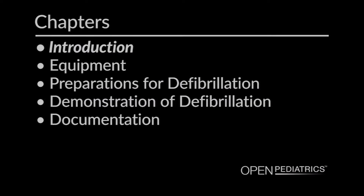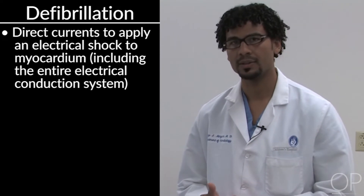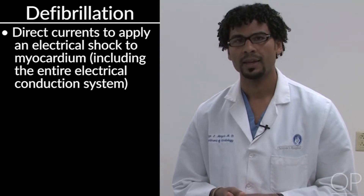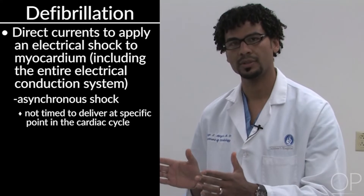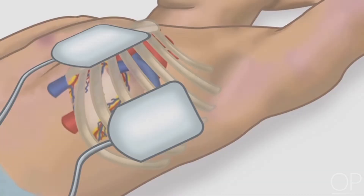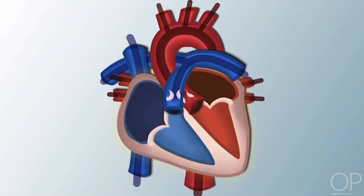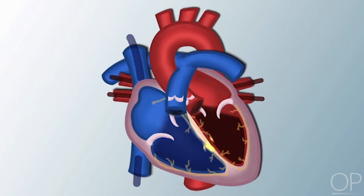Defibrillation involves using direct current to apply an electrical shock to the myocardium. It is an asynchronous shock, meaning that the shock is not timed to deliver at any specific point in the cardiac cycle. The goal in delivering the shock is to depolarize the myocardium and atrioventricular conduction. The depolarization effectively resets the sinoatrial node, allowing the restoration of sinus rhythm.